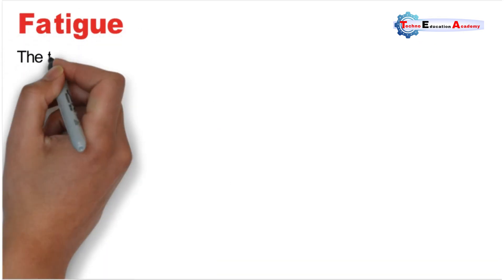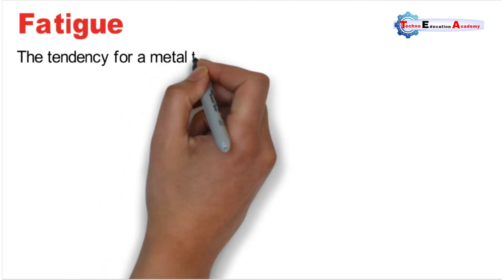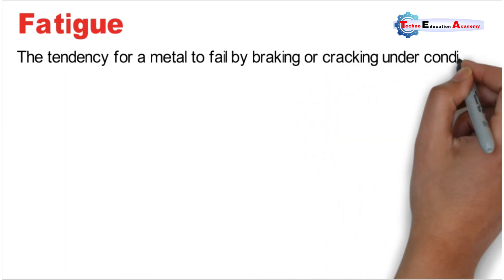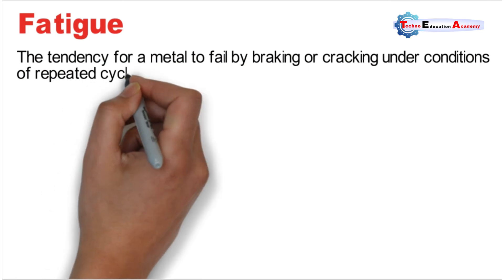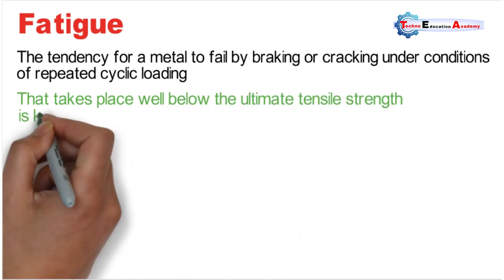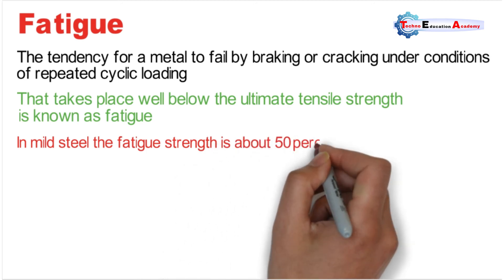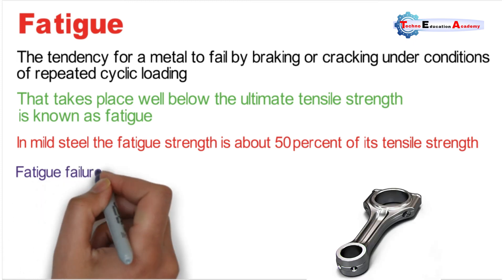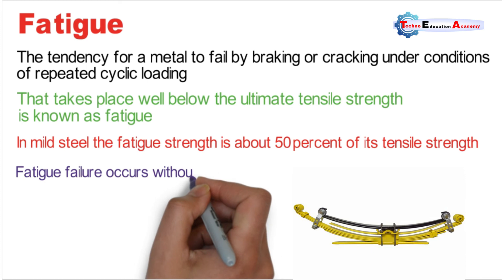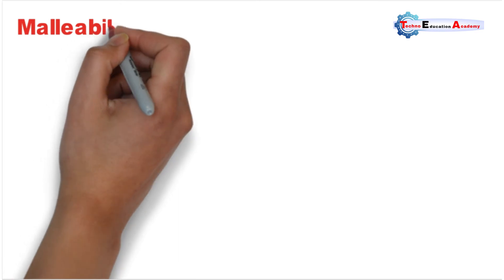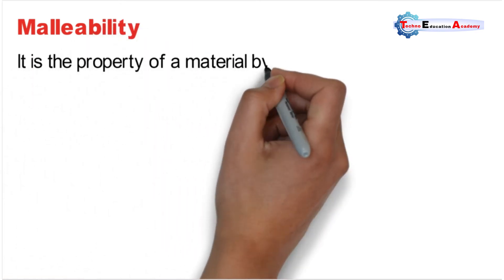The next property is fatigue. Fatigue is the tendency of a metal to fail by breaking or cracking under conditions of repeated cyclic loading that takes place well below the ultimate tensile strength. The amount of stress that can be applied to a metal without fracture while subjected to one million or more cycles of load reversal is known as fatigue strength. Connecting rods, leaf springs, aircraft wings, shafts, and gear teeth are subjected to fatigue. Fatigue failures occur without warning.